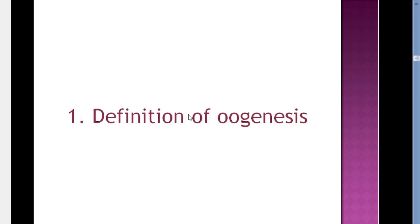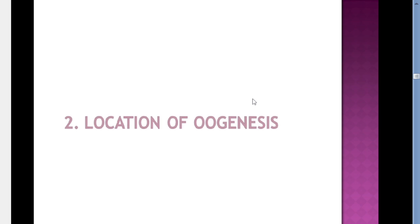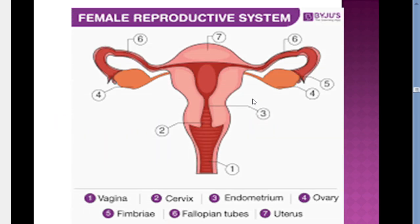So what is oogenesis? Oogenesis is the process of formation of haploid female gametes, which are oocytes, from diploid germ cells called oogonia. So in oogenesis we start by oogonia, and in spermatogenesis we start with spermatogonia. This process takes place in what we call the female reproductive system.